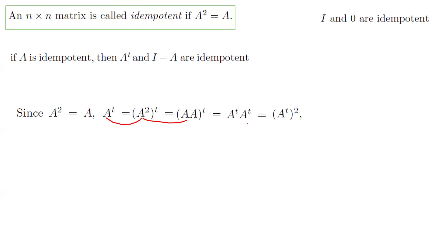The transpose of A times the transpose of A equals the transpose multiplied by itself. So the transpose of A equals the transpose of A multiplied by itself. If we let B equal the transpose of A, we have just shown that B equals B times B, which is exactly the definition of being idempotent.